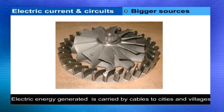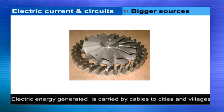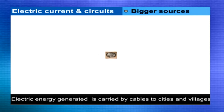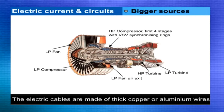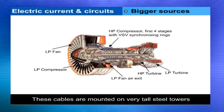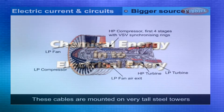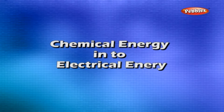Electrical energy generated at powerhouses is carried by electric cables to cities and villages. The electric cables are made of thick copper or aluminium wires. These cables are mounted on very tall steel towers.